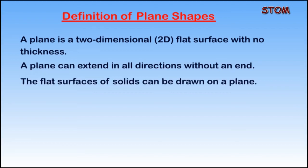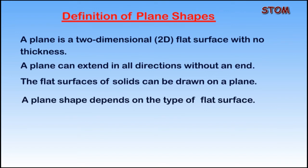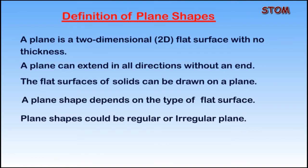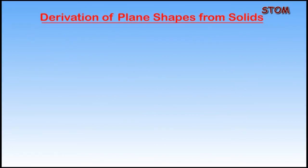The flat surfaces of solids can be drawn on a plane, and a plane shape depends on the type of flat surface. Plane shapes can be regular or irregular. Let's see how some plane shapes can be derived from solids.